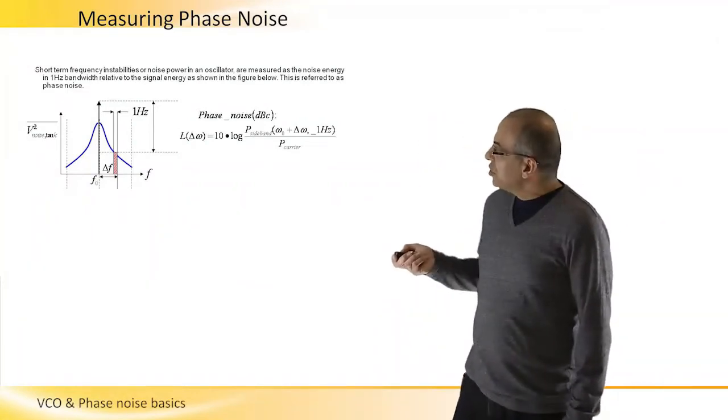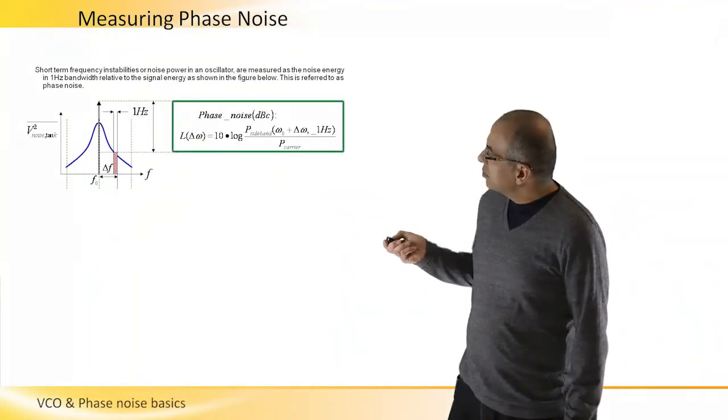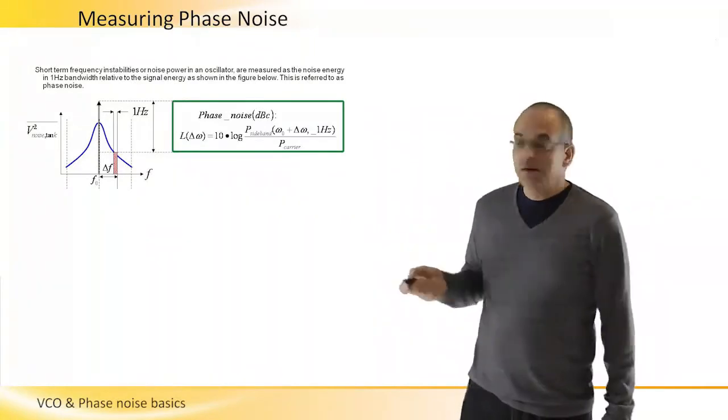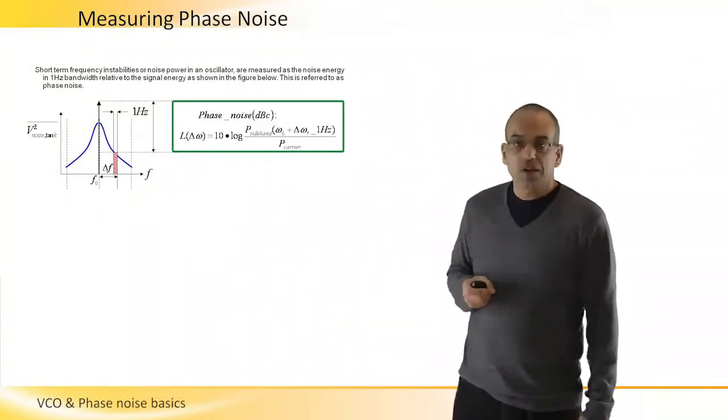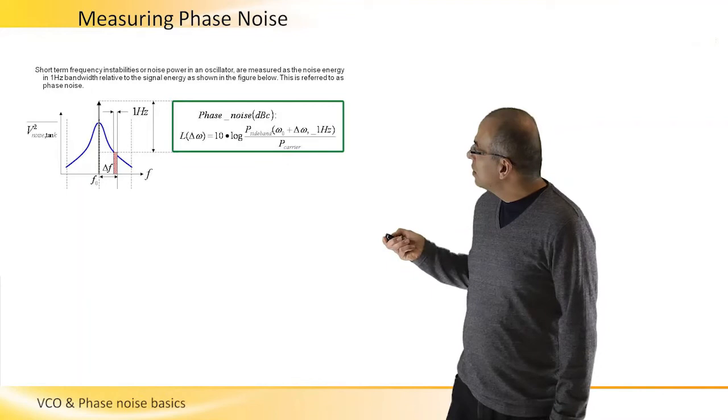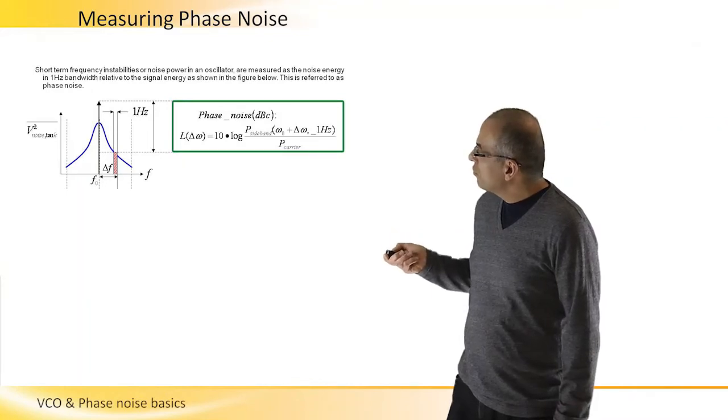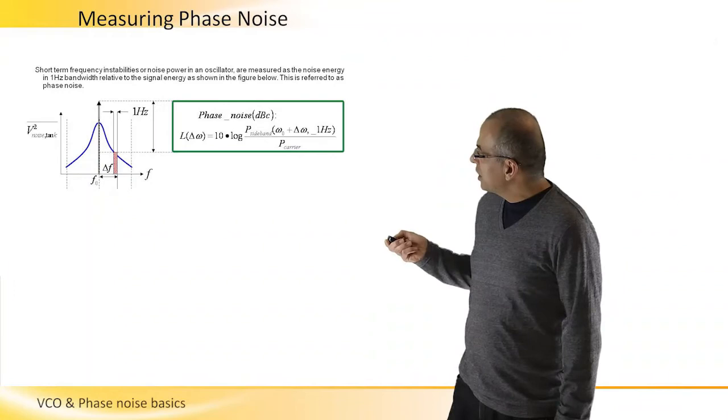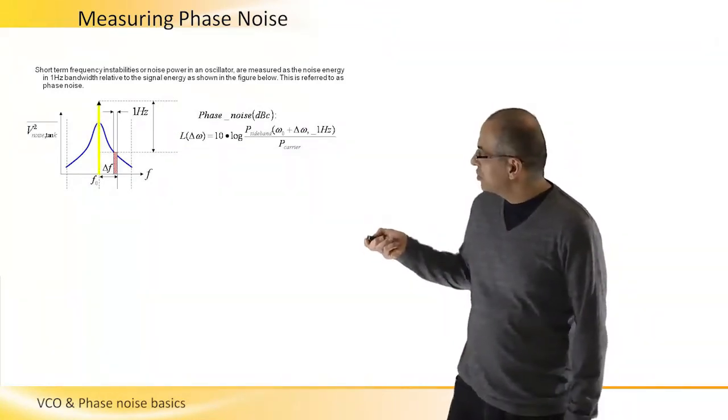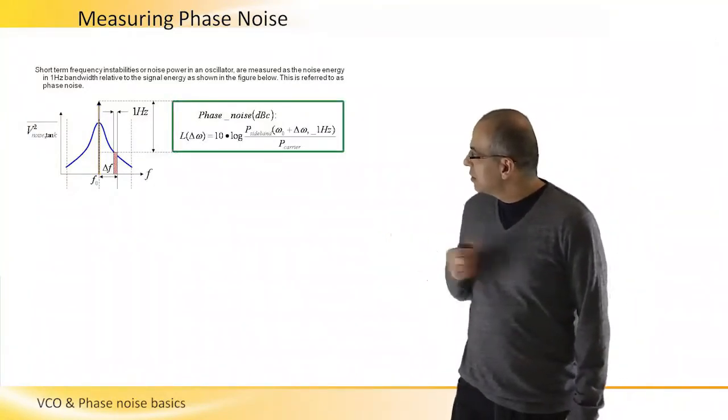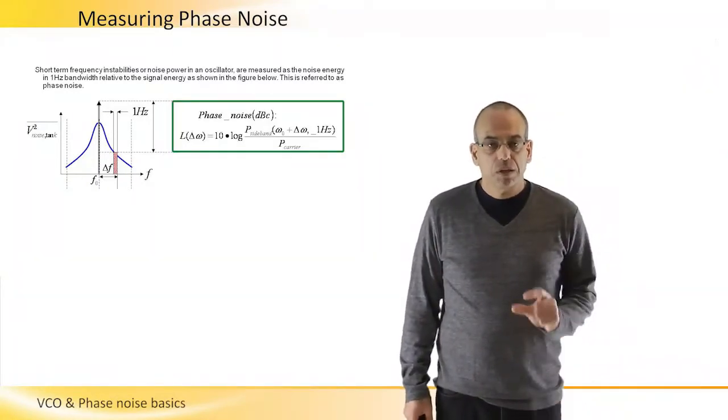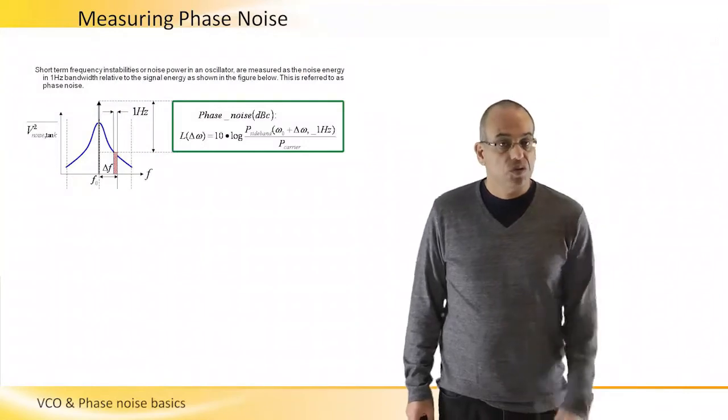The way we measure or qualify the phase noise of the signal is by taking a bandwidth of one Hertz distant delta F Hertz from center frequency, checking the energy in this one Hertz slice and comparing it to the energy at center frequency. If we look at the phase noise expression in dBs, it will be 10 times the logarithm of the power in one side band of one Hertz, which is delta W Hertz far away from center frequency. So we take this power and we normalize it to the power of the carrier, which is the center frequency. This is the simple mathematical expression describing the phase noise in dB.